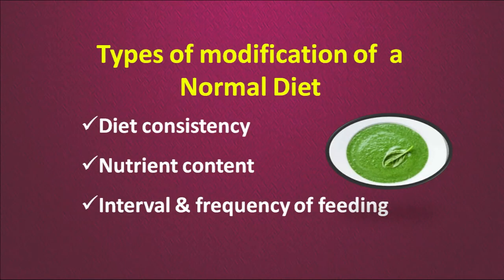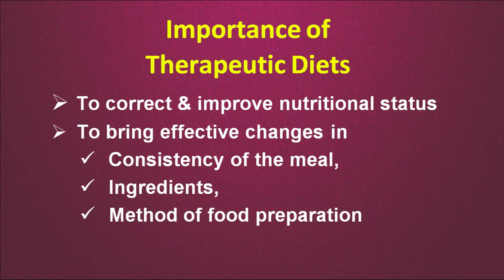How do we do it? There are types of modification of a normal diet. We can change the diet consistency, alter the nutrient content, and change the pattern and frequency of eating — at what intervals different types of diet during different kinds of illnesses can be given. Therapeutic diets are given to correct and improve nutritional status, bring effective changes in the consistency of the meal, ingredients used, and the method of food preparation.